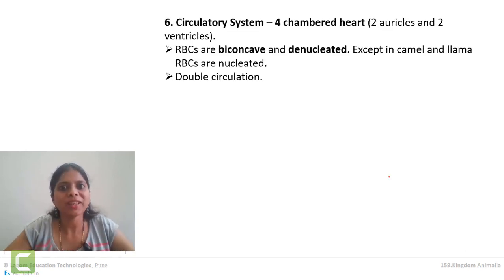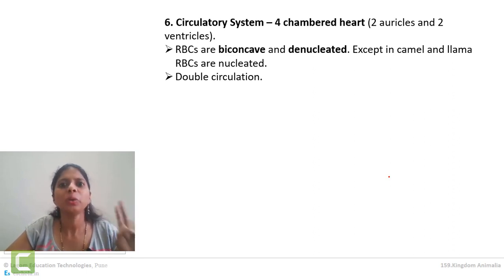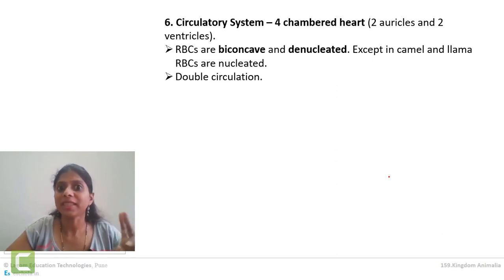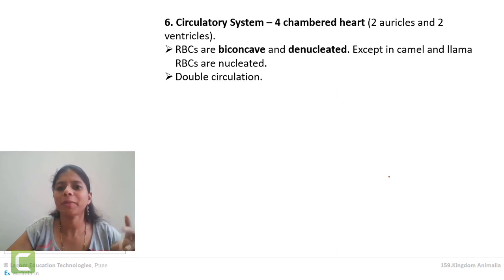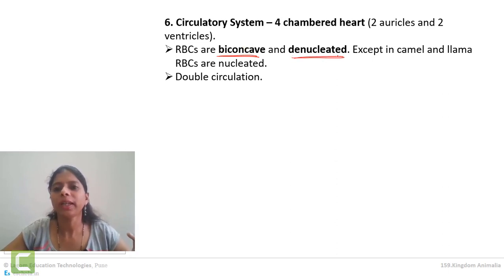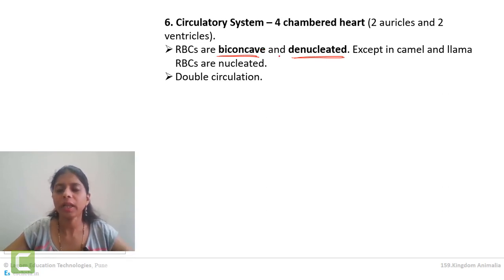Next characteristic is the circulatory system — easy to remember. Mammals have a four-chambered heart with two auricles and two ventricles, just like birds. Regarding RBCs, a very important fact: RBCs of mammals are always biconcave and they are denucleated, meaning RBCs do not have any nucleus.